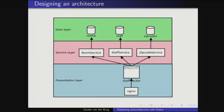I ended up designing an architecture maintaining three collections of data: rooms, staff members, and zip codes. I implemented a microservice with an HTTP interface providing read, update, delete, and create access to these records. I also developed a web application front-end as a separate process, divided the data over three databases, and used an Nginx proxy in front of the web application for reliability and efficiency.